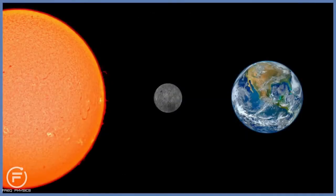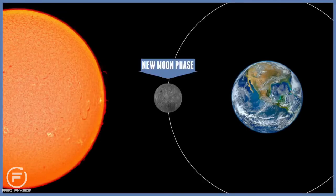When the moon is between the earth and the sun, during the new moon phase, the far side of the moon is covered in daylight.